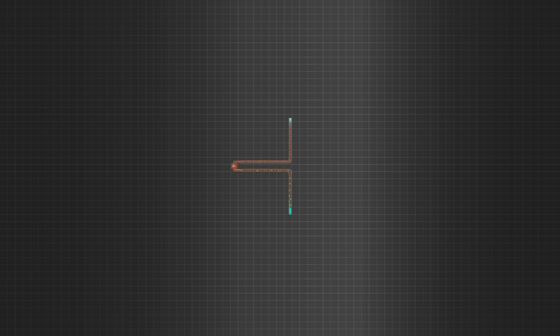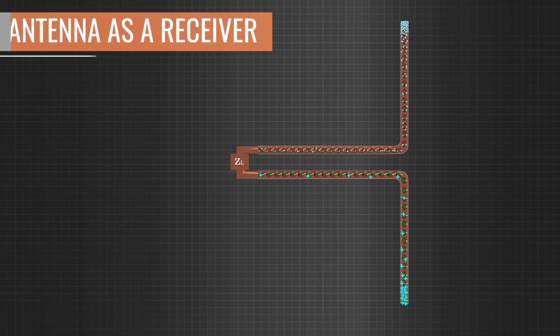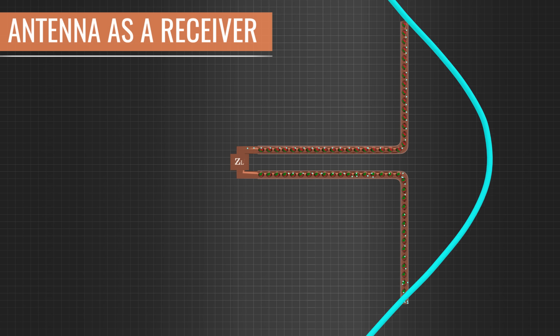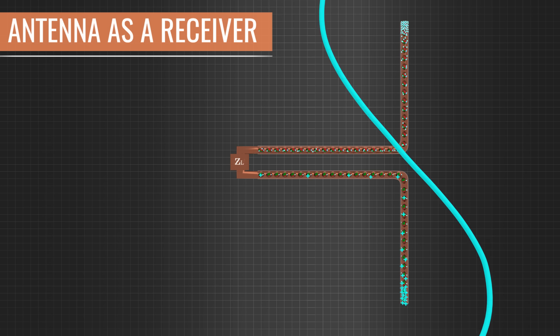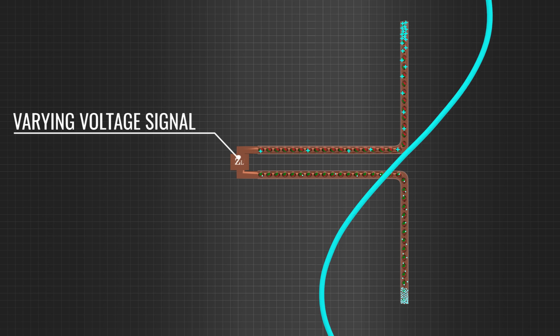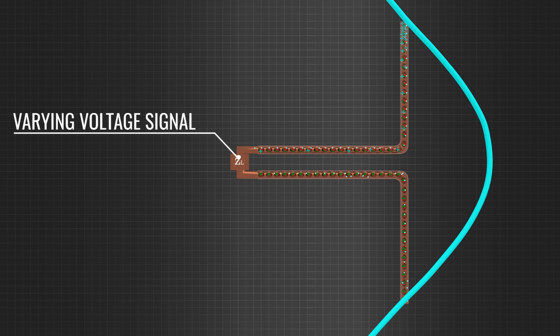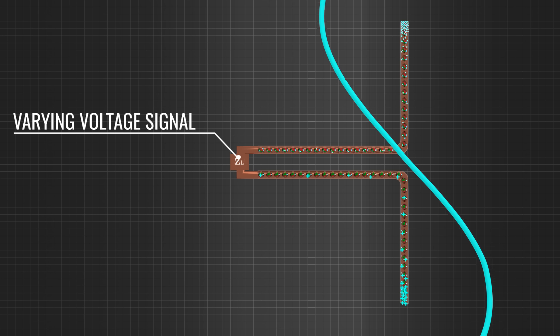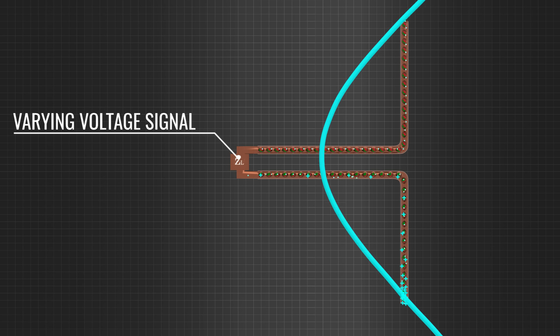The same antenna can act as a receiver if the operation of the antenna is reversed. When propagating electromagnetic waves strike the antenna, the oscillating fields of waves create positive and negative charges at the ends of the antenna. The varying charge accumulation means a varying voltage signal is produced at the center of the antenna. This voltage signal is the output when the antenna works as a receiver.